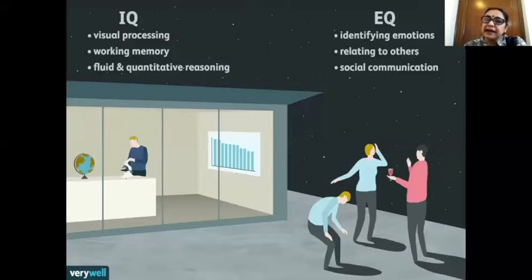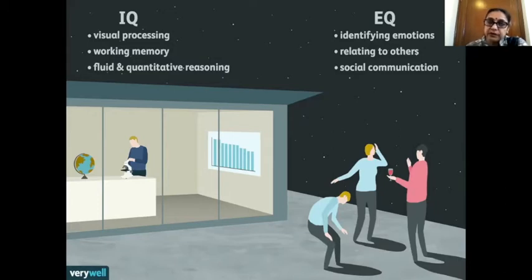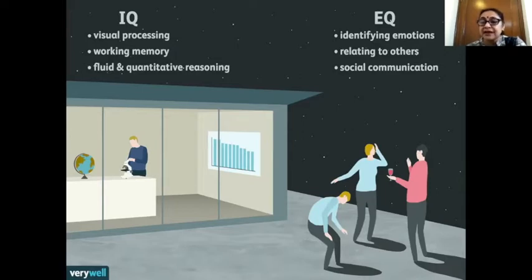When we compare emotional intelligence with IQ or mental ability, we see that IQ is better for visual processing, working memory, and most importantly fluid and quantitative reasoning. Whereas EQ levels are very important for identifying our own emotions and those of people around us, relating and managing our relationships with others, and for social communication.